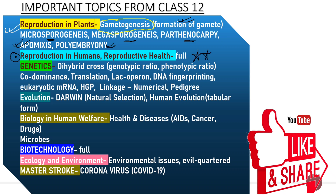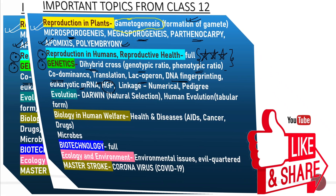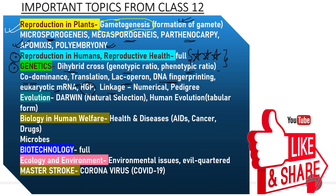Next unit is Reproduction in Humans and Reproductive Health, which is again very important. Next is your Genetics. In Genetics, please do read the dihybrid cross — the genotypic ratio and phenotypic ratio should be at your fingertips. Next is co-dominance, translation, Lac operon activity, DNA fingerprinting, eukaryotic mRNA, and the Human Genome Project (HGP). In Linkage, you have to really practice the numericals and the pedigree beforehand, which is very important.